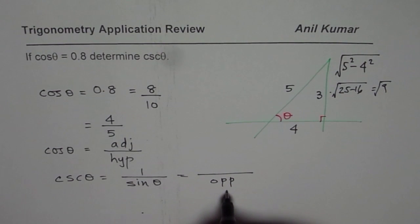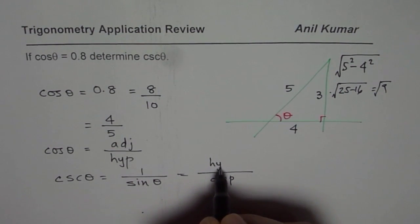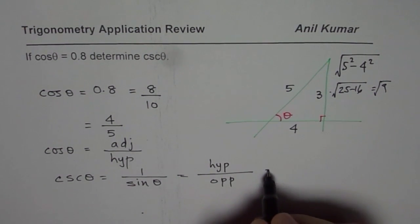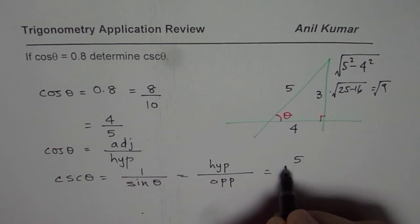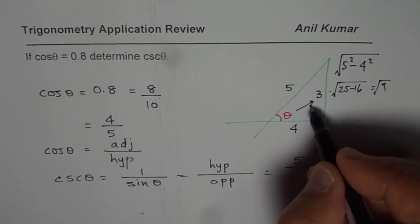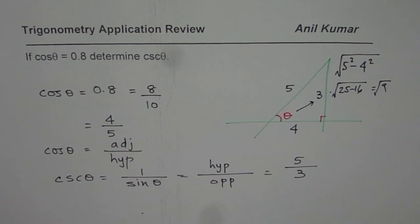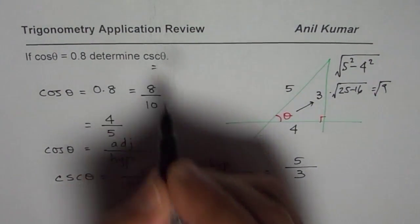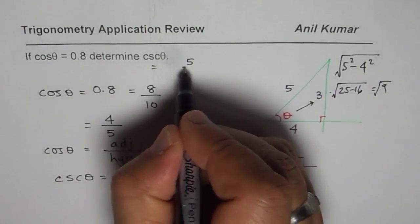So we write opposite over hypotenuse. So from here, hypotenuse is 5 and side opposite to θ is 3. So that is how you get your answer. So we say cosecant θ is equal to 5 over 3.